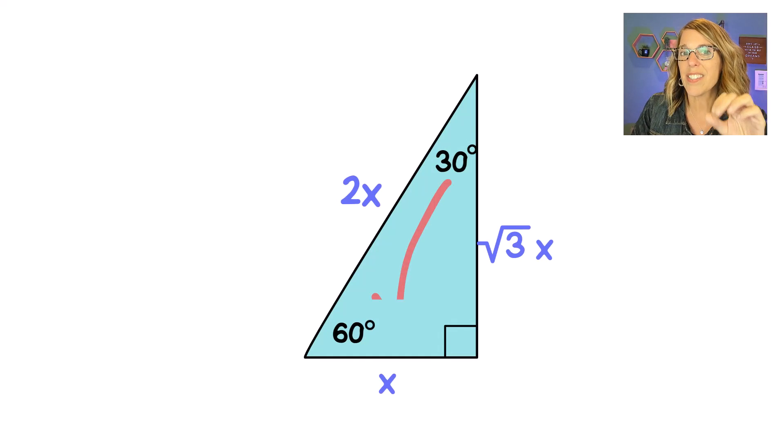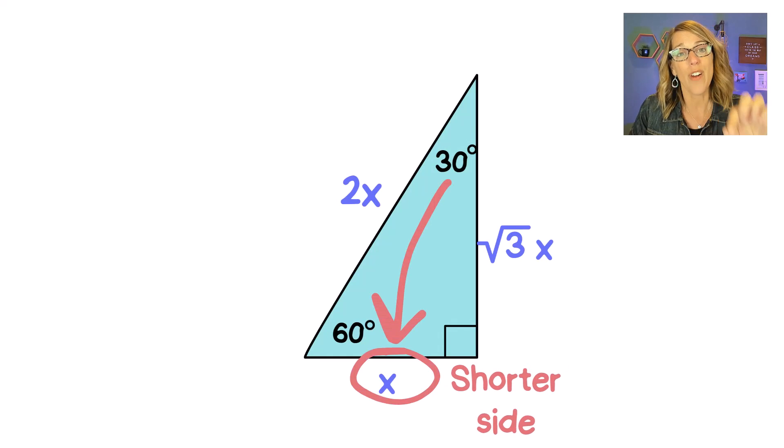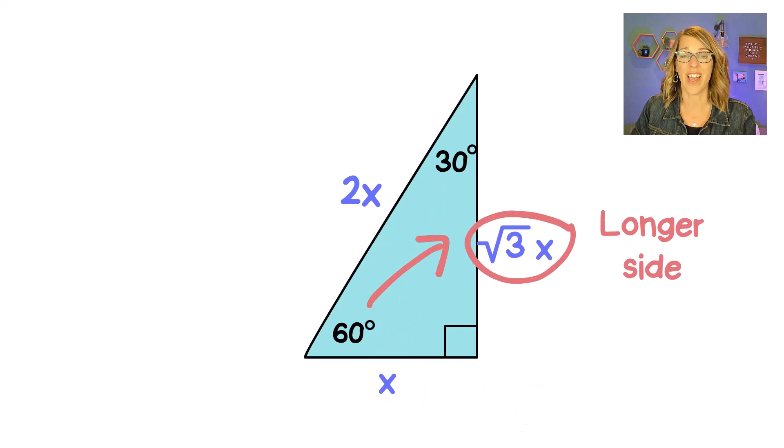Between my two sides I've got x which is the shorter side across from the smaller angle 30, and I've got the radical 3x which is the longer side across from my larger angle which is 60 degrees. I want to use this to solve this next triangle.